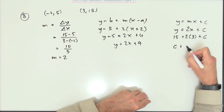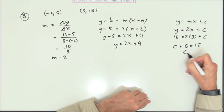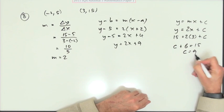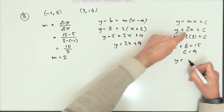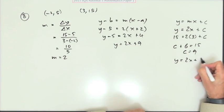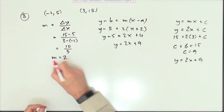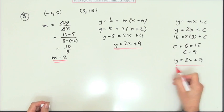I've got 15 is 2 times 3 plus c. Write that the other way around. c plus 6 is 15. So c is, take away the 6, 9. Same as before, y equals 2x plus c. So it's plus 9. Whichever way you like.